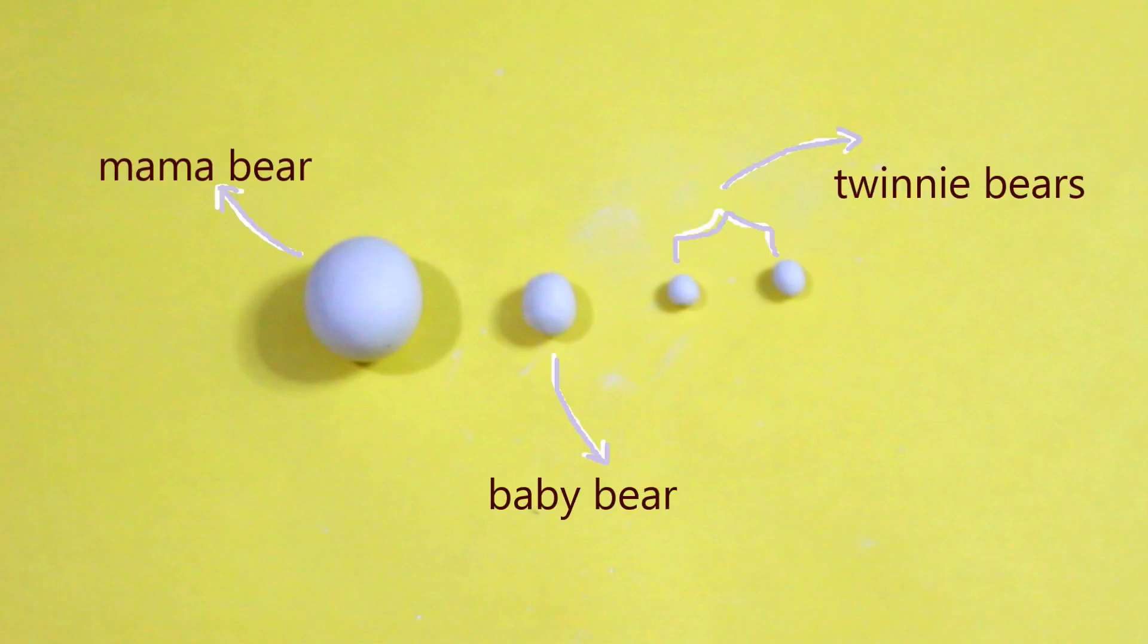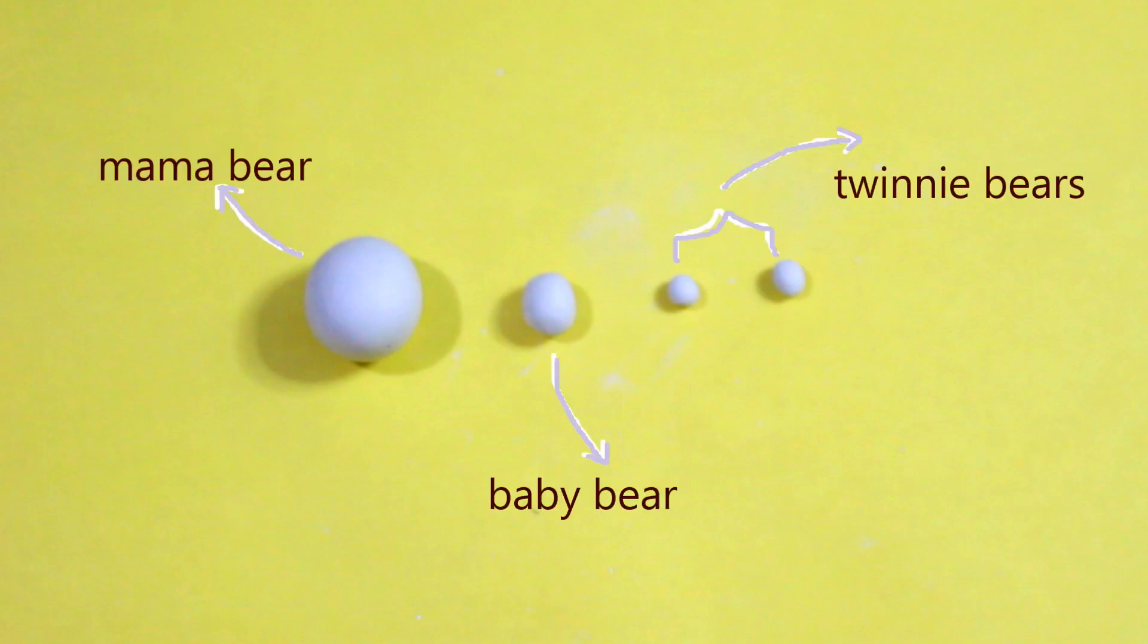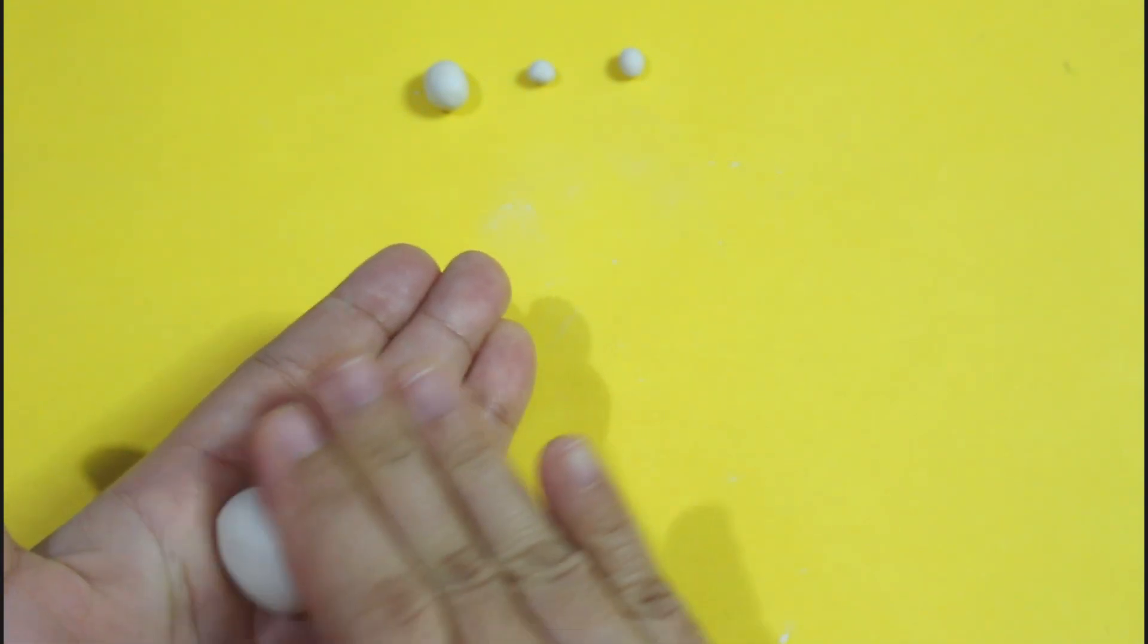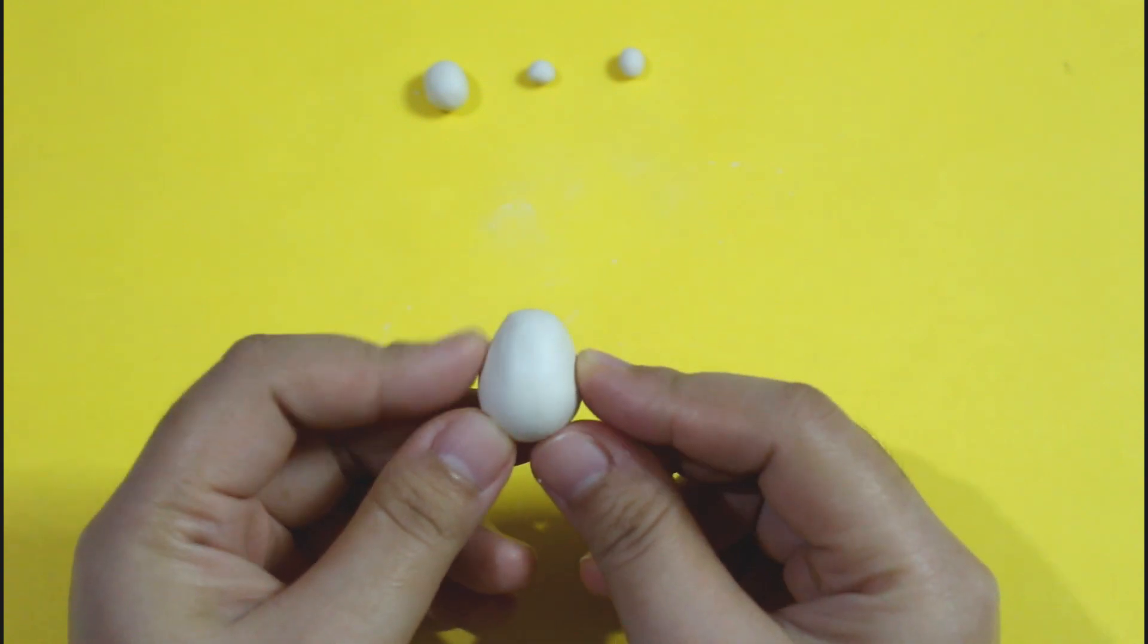Prepare the clay pieces you need so you can work faster preventing the clay to dry. With the bigger ball, roll the clay into an egg shape. This is going to be the body of the cat.